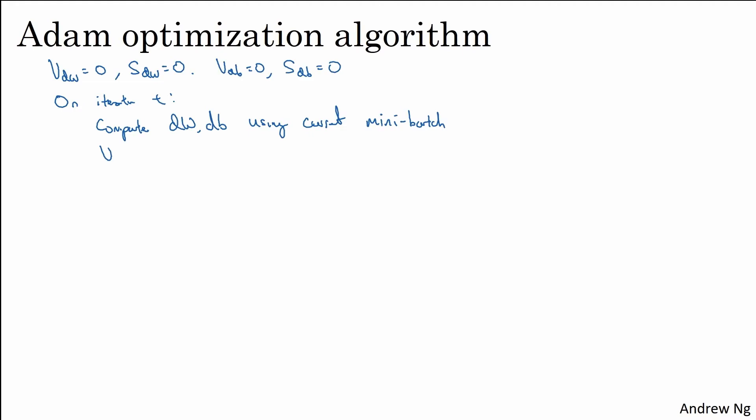And then you do the momentum exponentially weighted average. So VDW equals beta, but now I'm going to call this beta 1 to distinguish it from the hyperparameter beta 2 we'll use for the RMSprop portion of this. So this is exactly what we had when we're implementing momentum, except that I've now called the hyperparameter beta 1 instead of beta. And similarly, you'd have VDB as follows. So 1 minus beta 1 times DB.